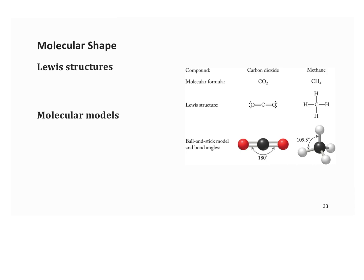As we've been going through the class, you have picked up that there are different ways to show chemical formulas. We can show a molecular formula, and we can show a Lewis structure. Now Lewis structures are really good at giving us a 2D view, but don't help us see spatial orientation, which would be more in 3D.